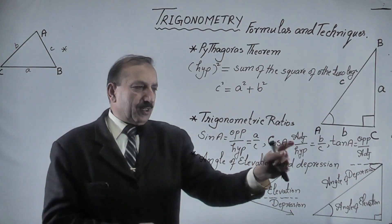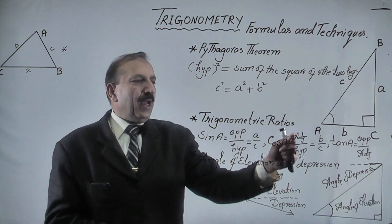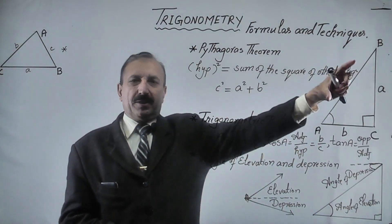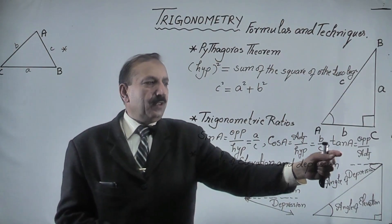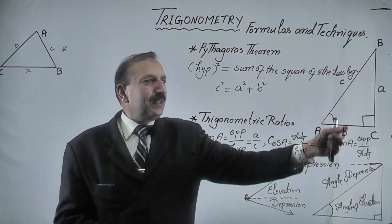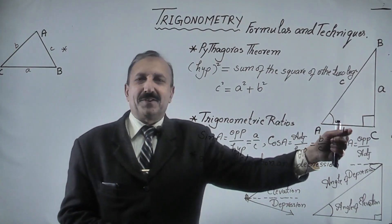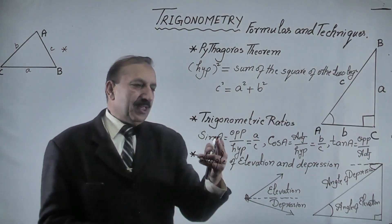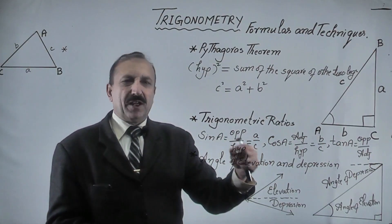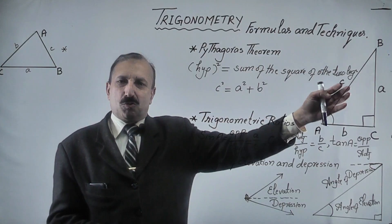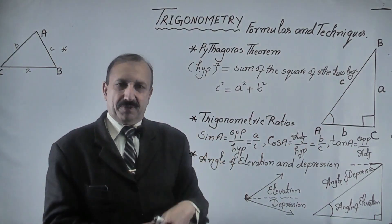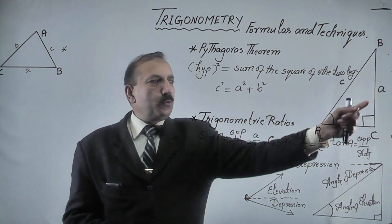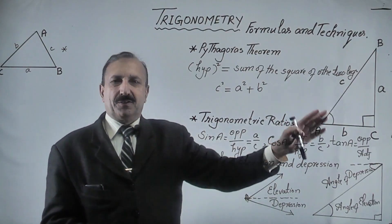Cosine of A is equal to adjacent over hypotenuse. Here, adjacent is side AC, labelled by small b, and hypotenuse is again the longest side. Tangent of A is equal to opposite over adjacent. These ratios help us when we have angles and sides to find, when some sides and angles are given. If one side and one angle are given, we can find another side. If two sides are given, we can find any angle in a right-angle triangle.